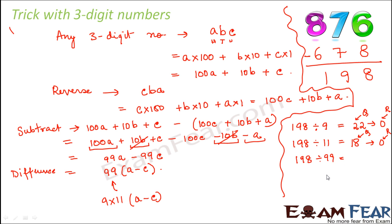In this case, 198 divided by 99 is 2. So 2 is the quotient and the remainder is 0. You see, you ask your friends to either divide by 9 or 11 or 99, every time the remainder would be 0.